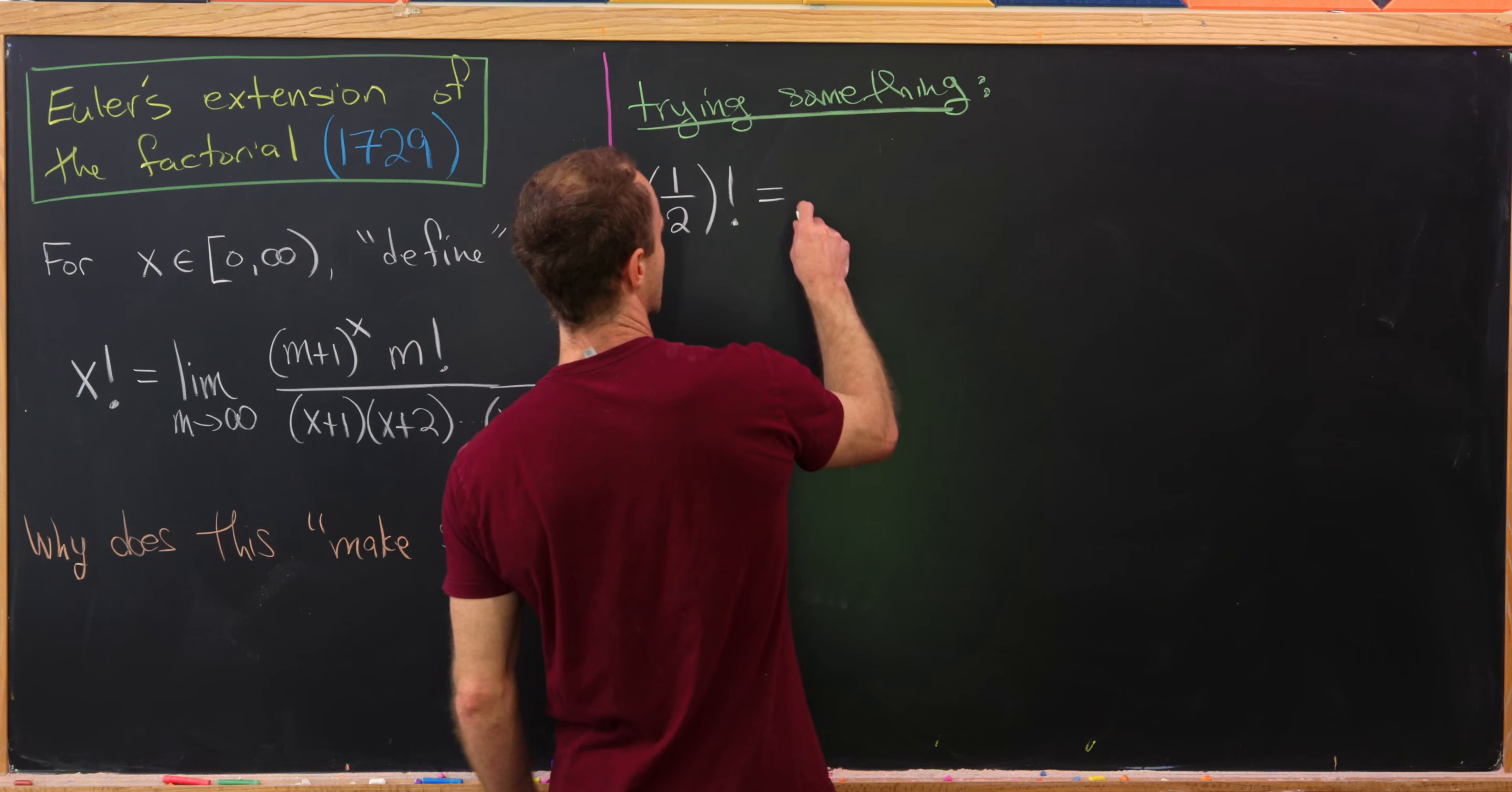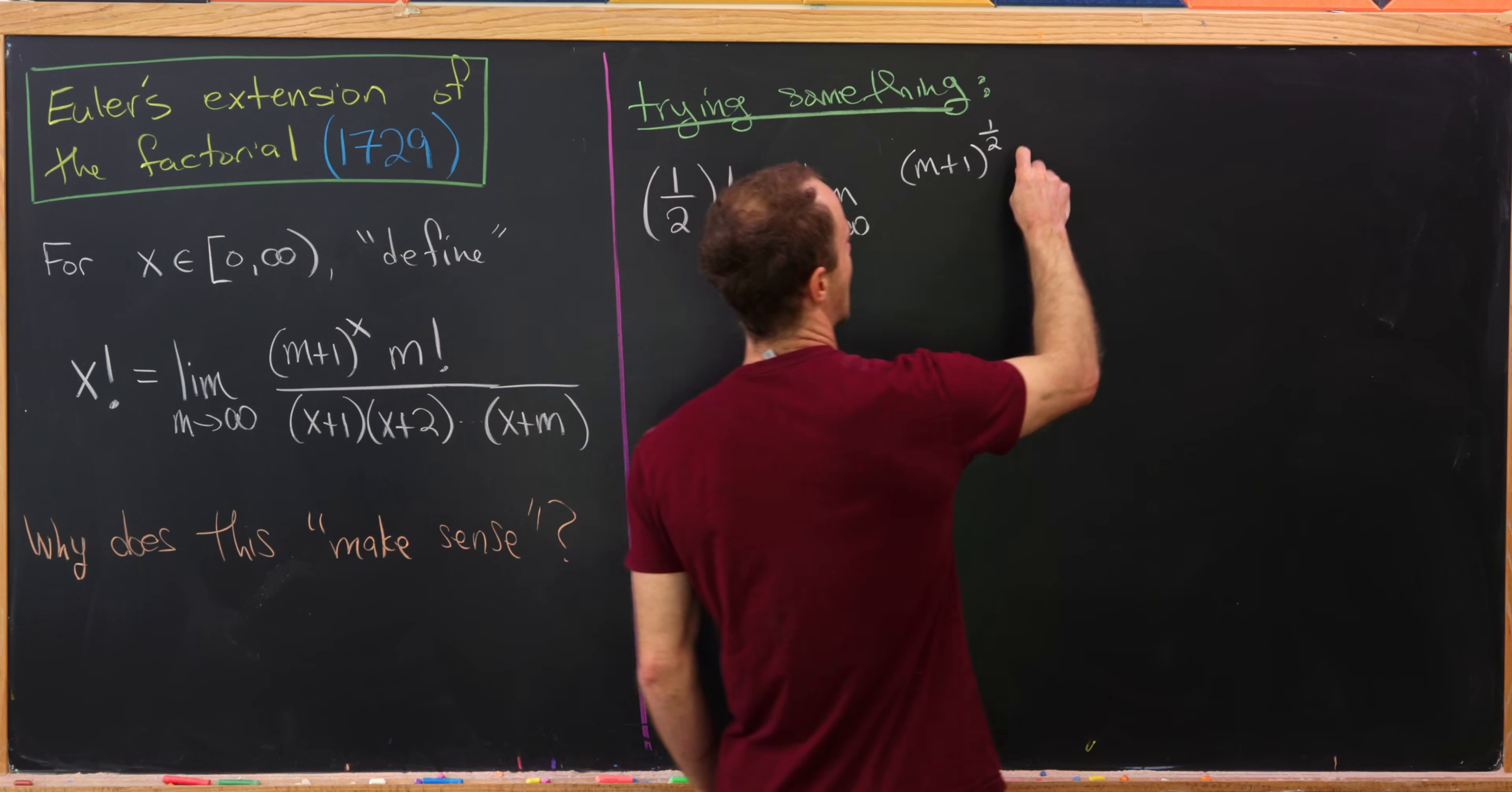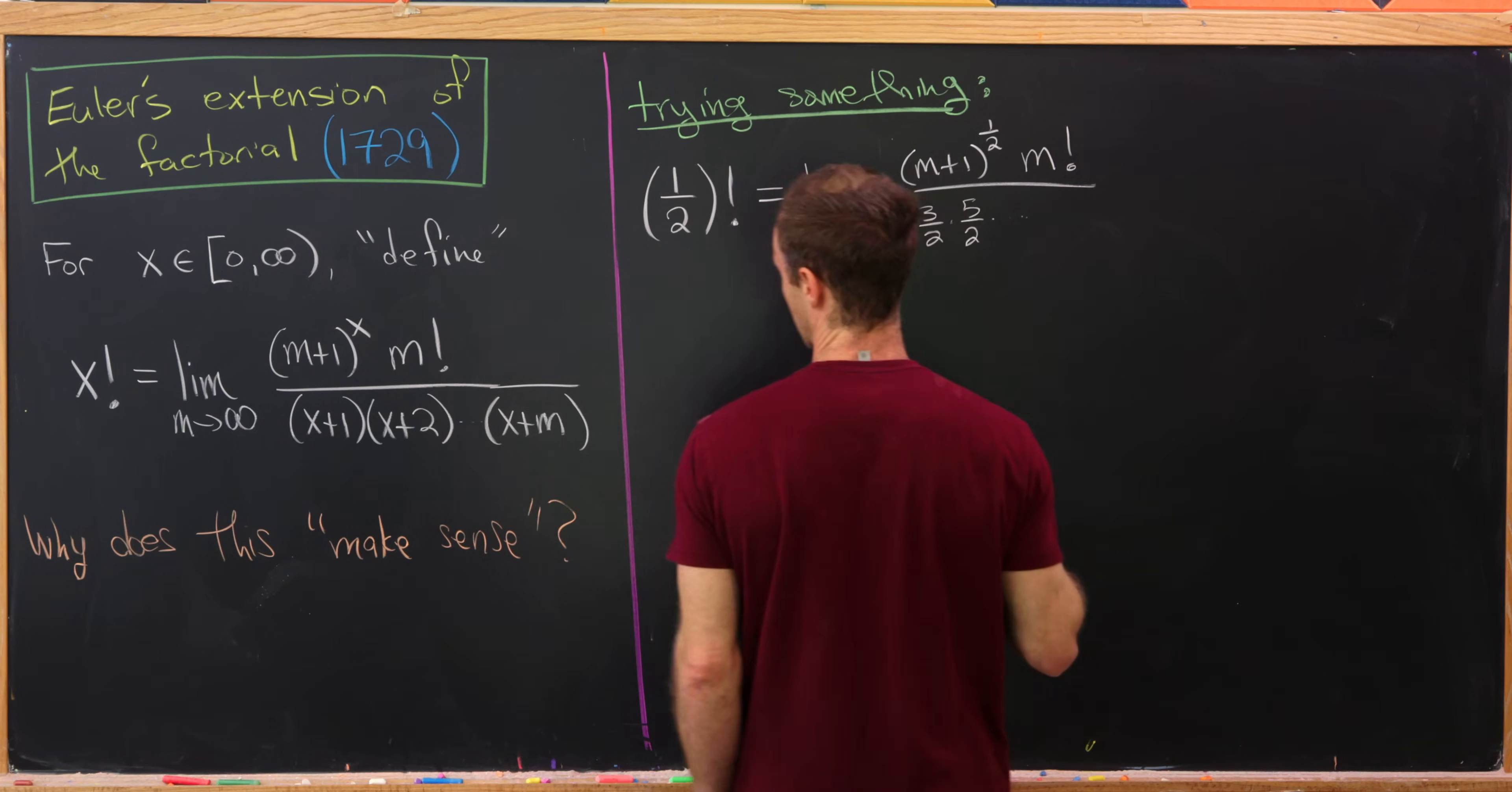So by what we have over here that will be equal to the limit as m goes to infinity of let's see we'll have (m+1)^(1/2). So you know maybe I want to write that as a square root, but I'll write it as a half for now. And then we'll have times m factorial over, well now this is going to be 1/2 + 1 which is 3/2, times 1/2 + 2 which is 5/2, times all the way up to 1/2 + m.